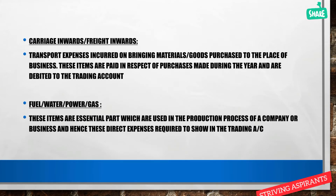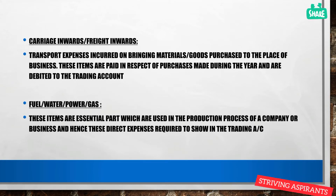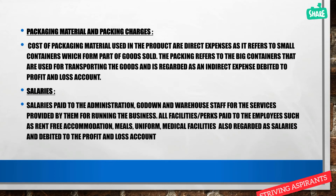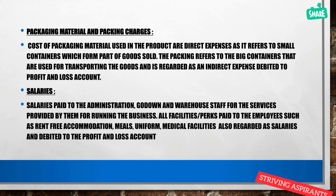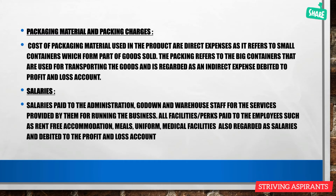Next are fuel, water, power, and gas — these are essential in the production process of a company. They are direct expenses shown on the debit side of the trading account. Next is packaging material and packing charges. When packaging involves small containers, it is treated as a direct expense. When large containers are used for transporting goods, it is regarded as an indirect expense and is debited to the profit and loss account.